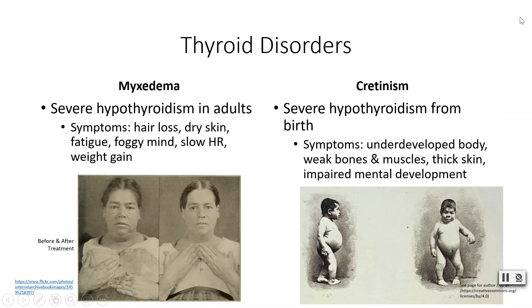Things can go wrong with the thyroid. Myxedema is severe hypothyroidism in adults. People suffering from myxedema will experience hair loss, dry skin, fatigue, mental fogginess, slower thinking, slowed heart rate, and weight gain. This image shows a patient before and after treatment — you can see she had gained weight and just looked unwell. After treatment, she lost some weight and looks better.